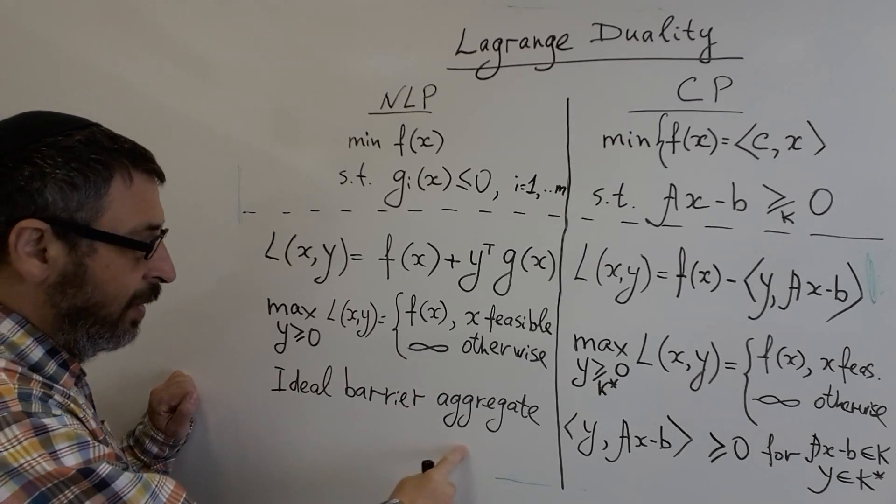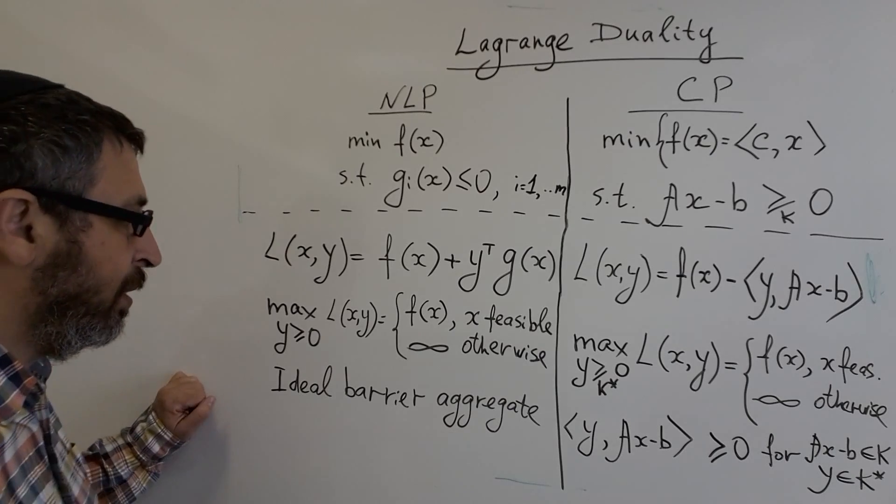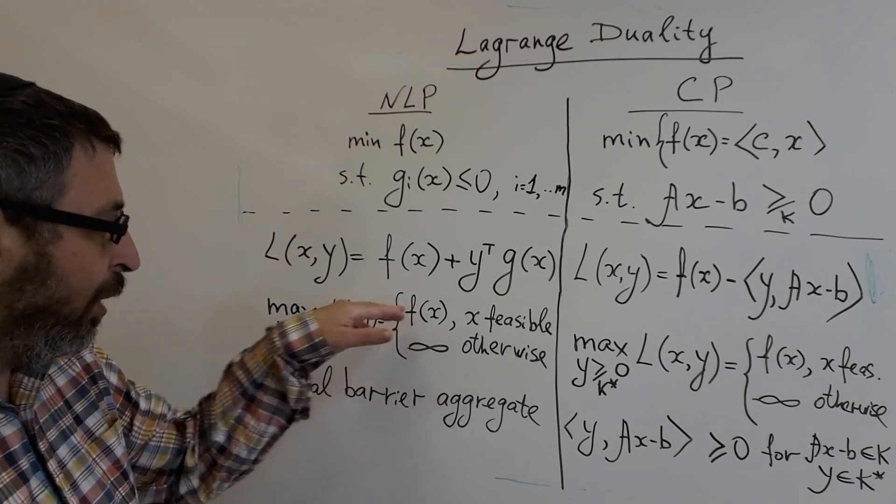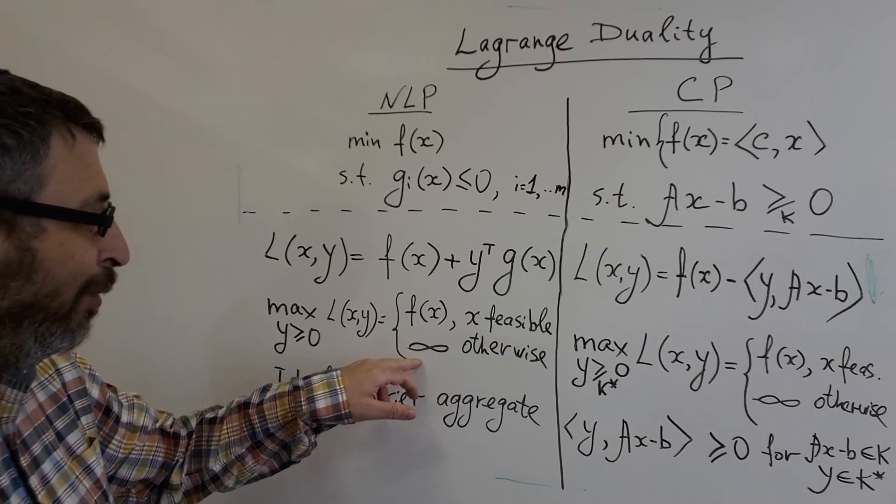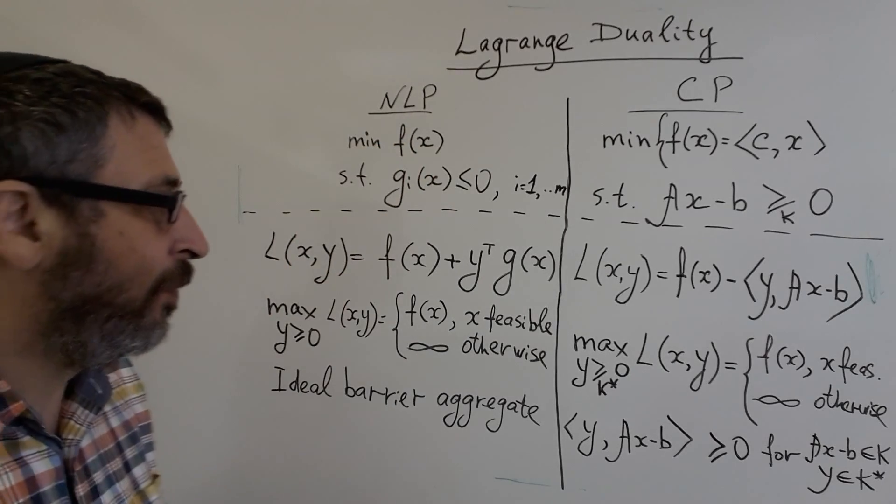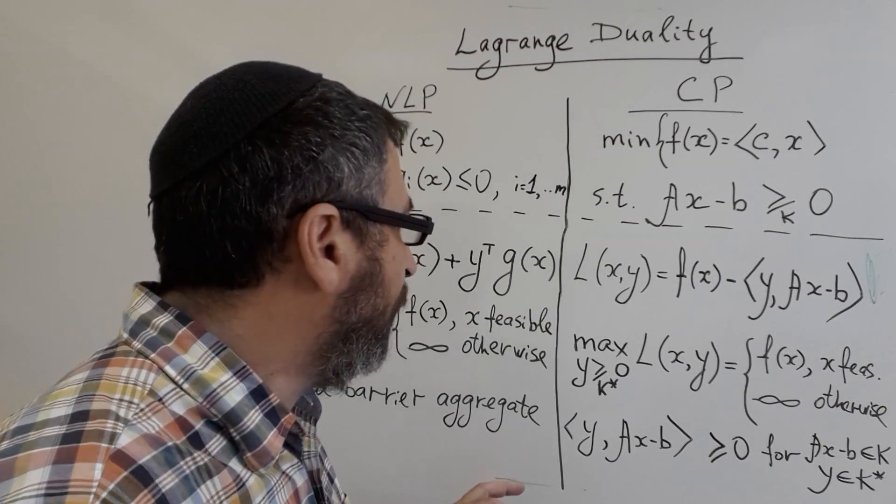And this is the ideal barrier aggregate or ideal penalty aggregate. It has a very nice property: when we minimize over X, we can obtain our solution of the original problem. What will happen with conic programming?